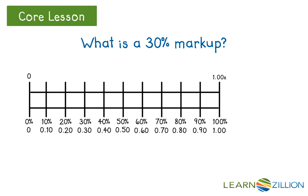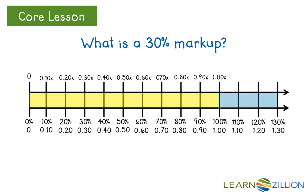The class is going to pay 100 percent of X. This is shown by the yellow bar on the double number line. They could write this as 1.00X or just X. Then they have to add 30 percent of X as the markup. This is shown by the blue bar on the double number line. They would write it as 0.30X.